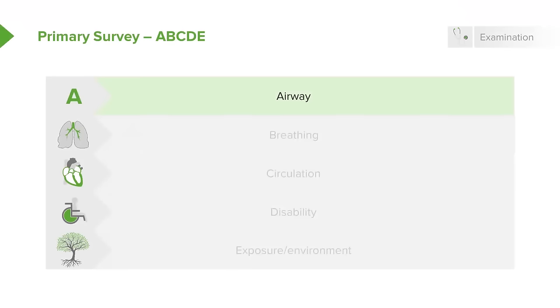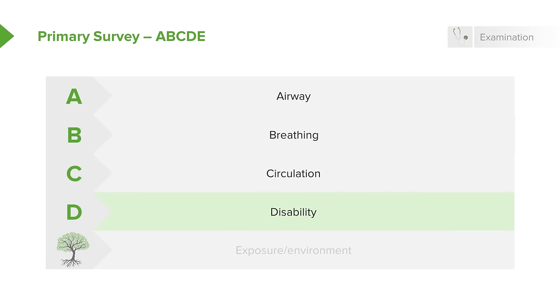The primary survey follows the same order every time. It begins with airway, followed by breathing, circulation, disability, and lastly, exposure of the patient and assessment of the environment.